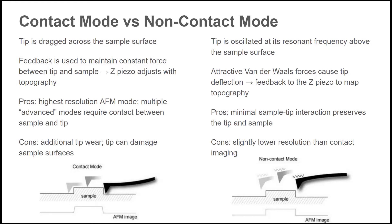In a non-contact measurement, the tip is oscillated very quickly. Non-contact tips are stiffer than contact tips and act more like springs — they have a resonant frequency. As the tip comes close to the sample, van der Waals forces cause deflection, which will feed back to the z-piezo and map out the topography. Because the tip is oscillating, it has less interaction with the sample and there will be less overall wear. This is why non-contact measurements are generally preferred over contact measurements.